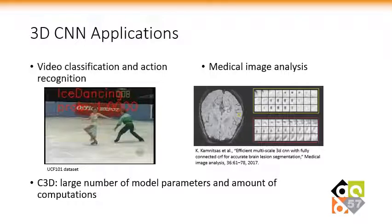3D CNNs have been widely applied in areas like video classification and action recognition as well as medical image analysis. The standard 3D CNN architecture, namely C3D, suffers from a large number of model parameters and a large amount of computations.